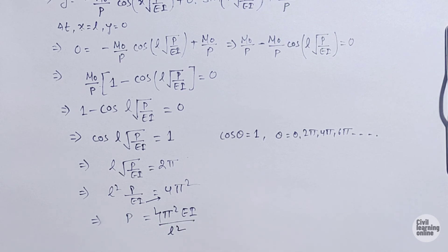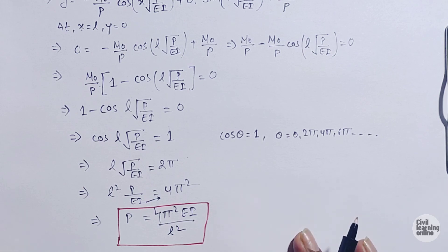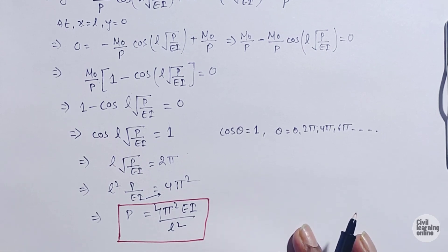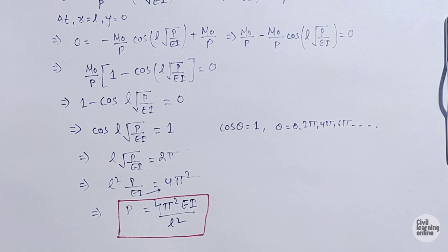This is the crippling load expression when both ends of the column are fixed. In the next lecture we will discuss the case when one end is fixed and the other is hinged, and also the Rankine formula. Till then, stay safe and take care of yourself — see you in the next video.